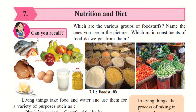Nutrition and Diet. Can you recall which are the various groups of foodstuffs? Daily we have so many different types of foodstuffs. We have different foodstuffs for breakfast, for lunch, for dinner and as snacks. We have vegetables, we have fruits, we have fats, we have milk. So these are the various foodstuffs throughout the day we have.